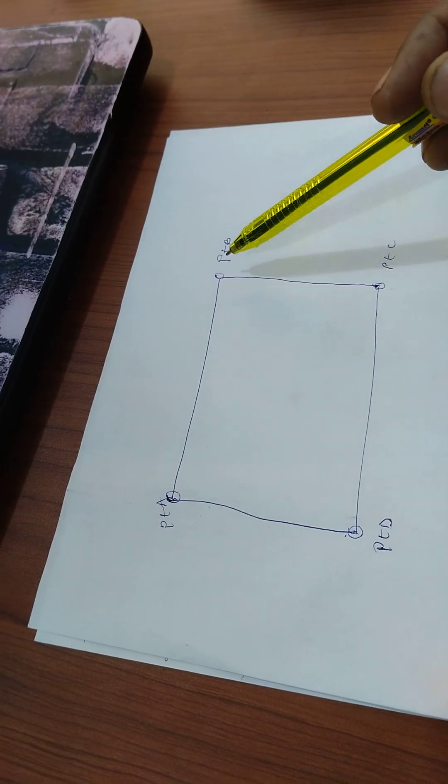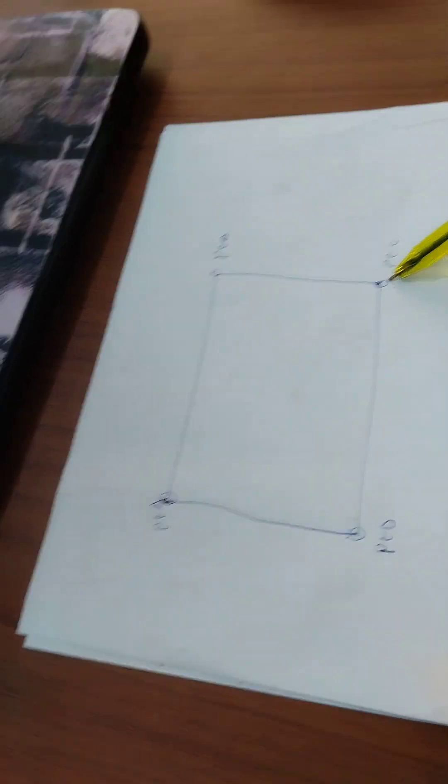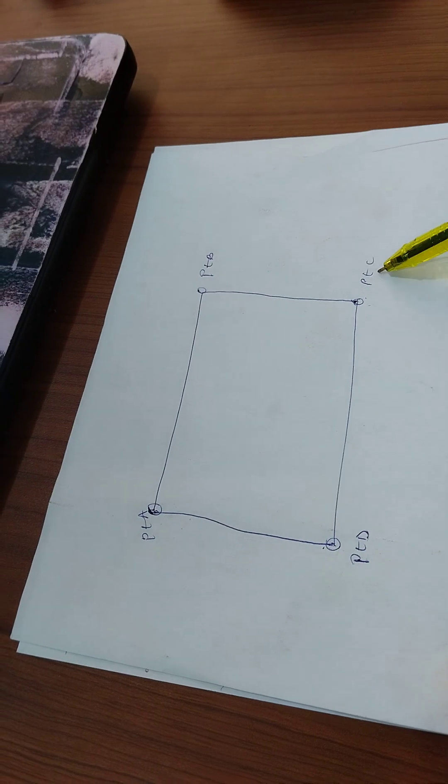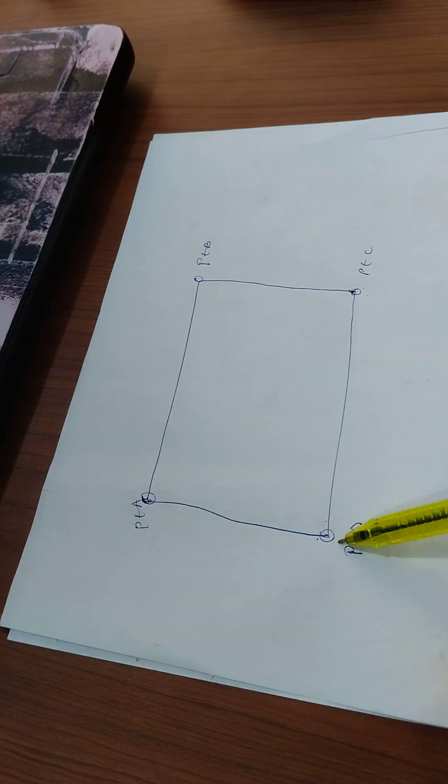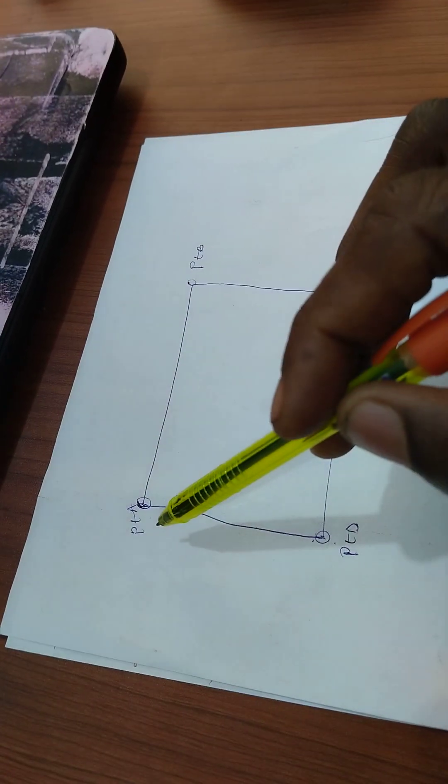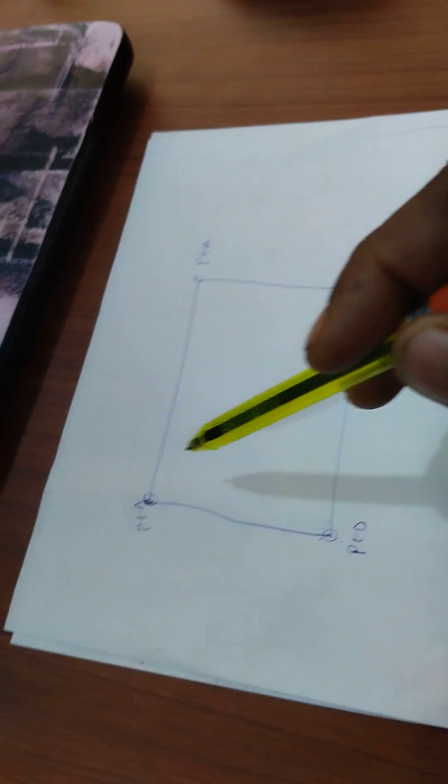Then you take linear measurement from point B to C. Also put it down. Then you take linear measurement from point C to D, and also from point D back to A.